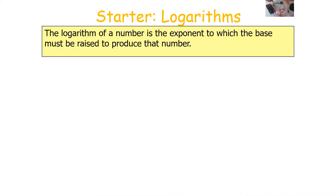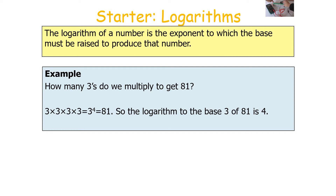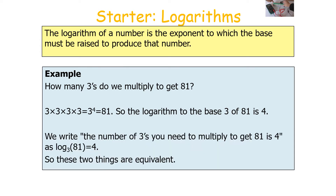The logarithm of a number is the exponent to which the base must be raised to produce that number. For example, how many 3's do we have to multiply to get to 81? Well, 3 times 3 times 3 times 3, or 3 to the power of 4, is equal to 81. So the logarithm to the base of 3 of 81 is 4 — the number of 3's you need to multiply to get 81.